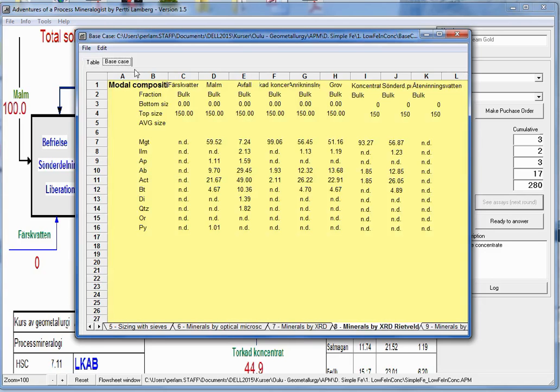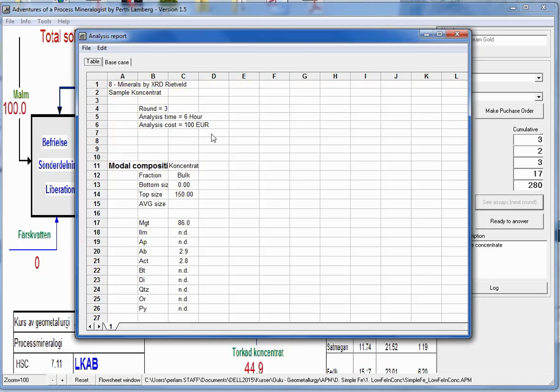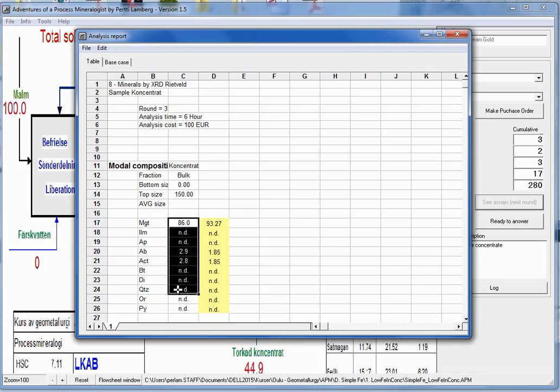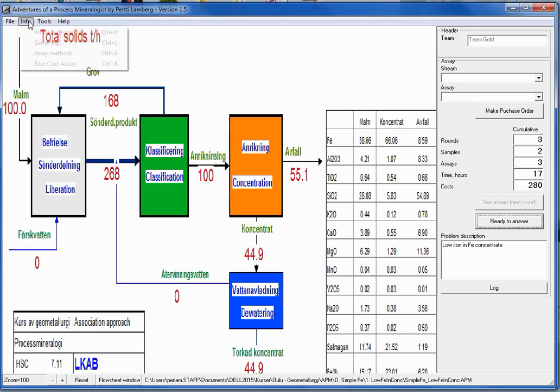So 86% magnetite. If we just compare that to base case. Concentrate here. There's a quite big difference in magnetite. And something you also realize here, that the sum is not 100%. So this method with the Rietveld is maybe not good enough. But this seems to be a big difference.